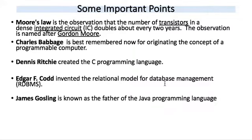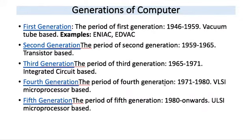James Gosling is known as the father of the Java language. Regarding generations of computers: first generation used vacuum tubes (e.g., ENIAC); second generation was transistor-based; third generation was IC-based; fourth generation used VLSI microprocessors; and fifth generation uses ULSI — Ultra Large Scale Integration — processors. The size of the IC chip kept decreasing across generations.